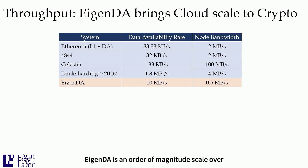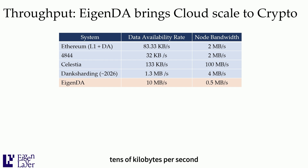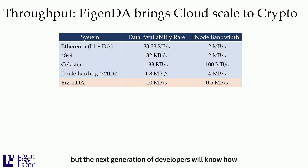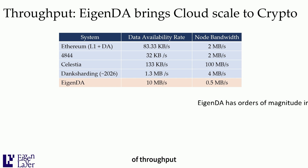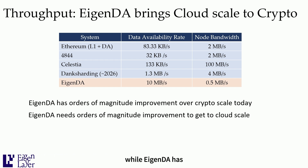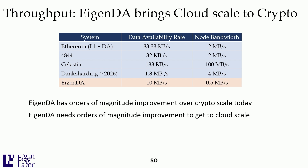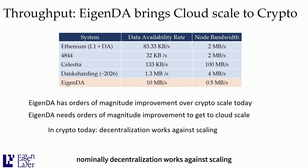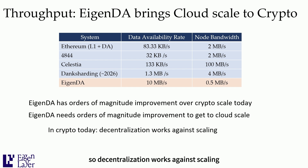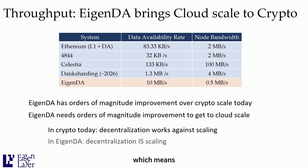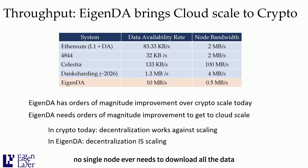The high-level idea is EigenDA is an order of magnitude in scale over anything out there. Ethereum's EIP-4844, coming with the Dencun upgrade, is tens of kilobytes per second. EigenDA is going to launch at 10 megabytes per second — more throughput than we know how to use today, but the next generation of developers will know how to use this scale. While EigenDA has orders of magnitude improvement over crypto scale today, we don't think this is sufficient. Our goal is to convert cloud to crypto, which means we need much more scale. In crypto, decentralization nominally works against scaling, but EigenDA scales horizontally — meaning decentralization is scaling. The more nodes you have, the more throughput you can pump through the network. No single node ever needs to download all the data.